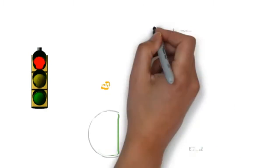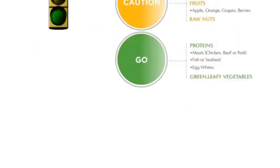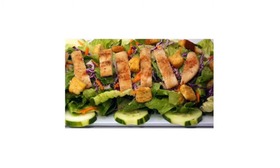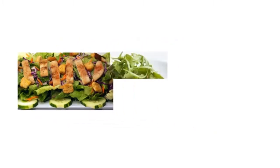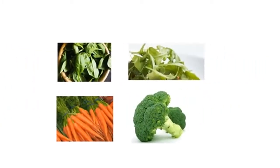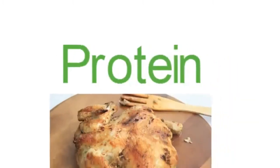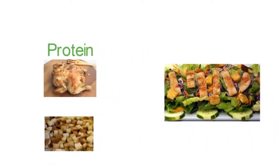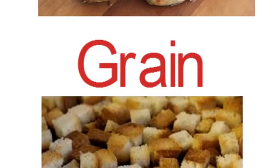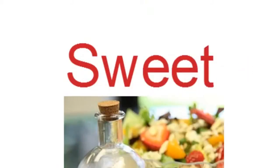The easiest way before you start is to look at your salad and break down the foods into individual groups. For example, you see arugula, spinach, broccoli, and carrots — those are all vegetables. Next you see chicken, which is a protein. You also see croutons, which are made from grains, so those go into the grain category.